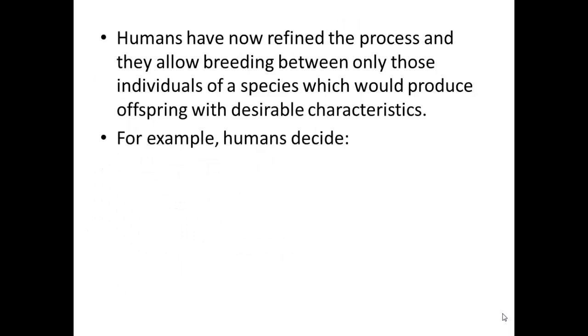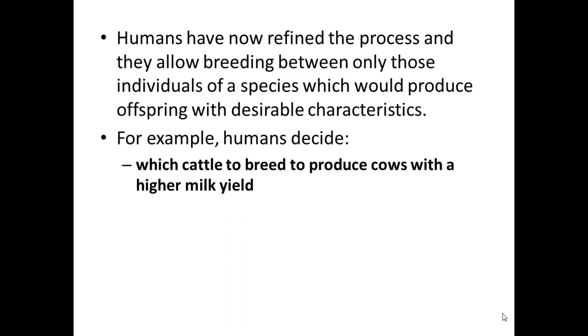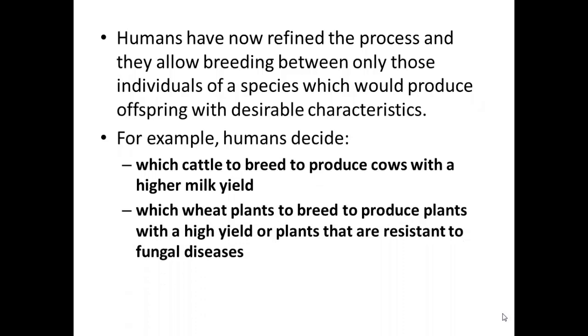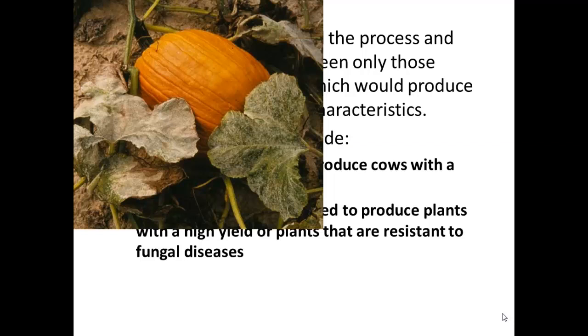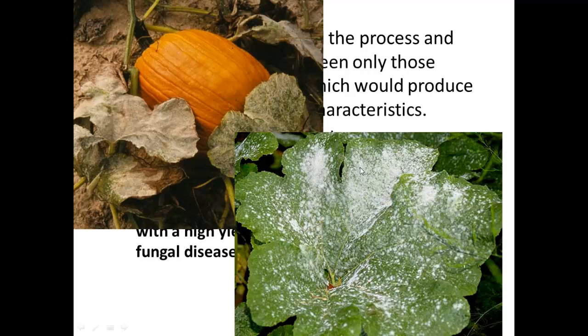We've now refined this process and aim for all sorts of desirable characteristics. For example, we'll decide which cattle to breed to produce cows with a higher milk yield, or which wheat plants to breed to produce plants with a higher yield or resistance to fungal diseases. This pumpkin plant in the image gets covered in mildew — that white powdery fungus destroys the leaves, cuts down productivity and reduces the amount of photosynthesis that leaf can do, therefore the amount of glucose it can produce.